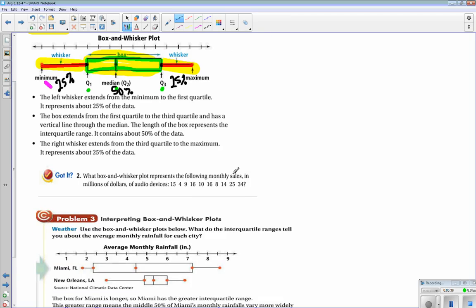So let's see if we can make a box and whisker plot. Which box and whisker represents the following monthly sales in millions of dollars of audio devices: 15, 4, 9, 16, 10, 16, 8, 14, 25, 34. The first thing I'm going to do is order these from least to greatest: 4, 8, 9, 10, 14, 15, two 16s, 25, and 34.